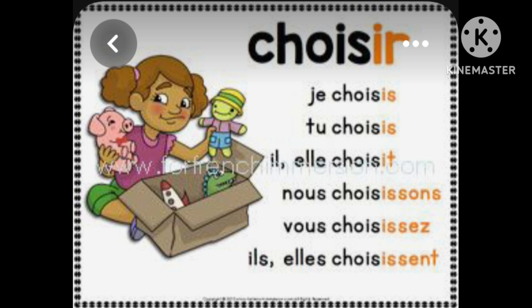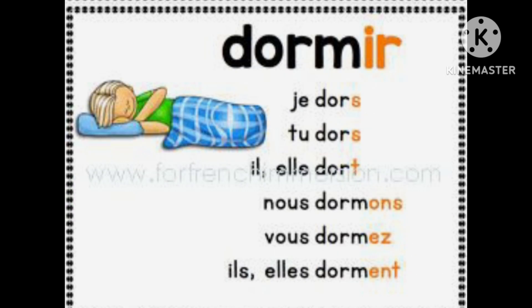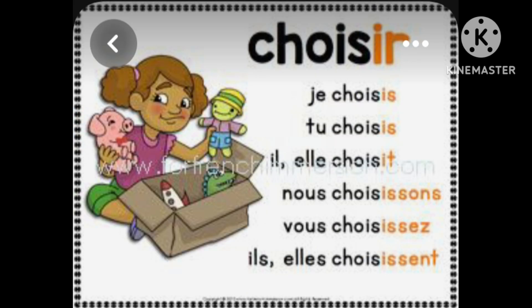IR group of verbs are the second group of verbs which follow a certain pattern, but not all verbs. For example, choisir follows the pattern, but dormir, offrir, or partir do not follow this pattern. IR group of verbs have endings like -is, -is, -it, -it, -issons, -issez, -issent. To apply this, remove IR and add the ending.